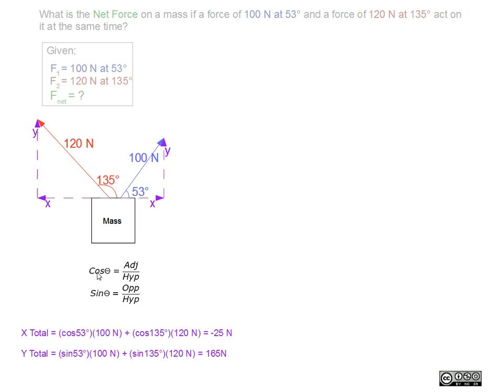We solve in a similar way for the y components. Looking at the diagram, the y vectors are opposite to their respective angles and the hypotenuse and angles are given. So to find the y values, we use the sine formula, isolating opposite for both vectors as shown below in purple as well.